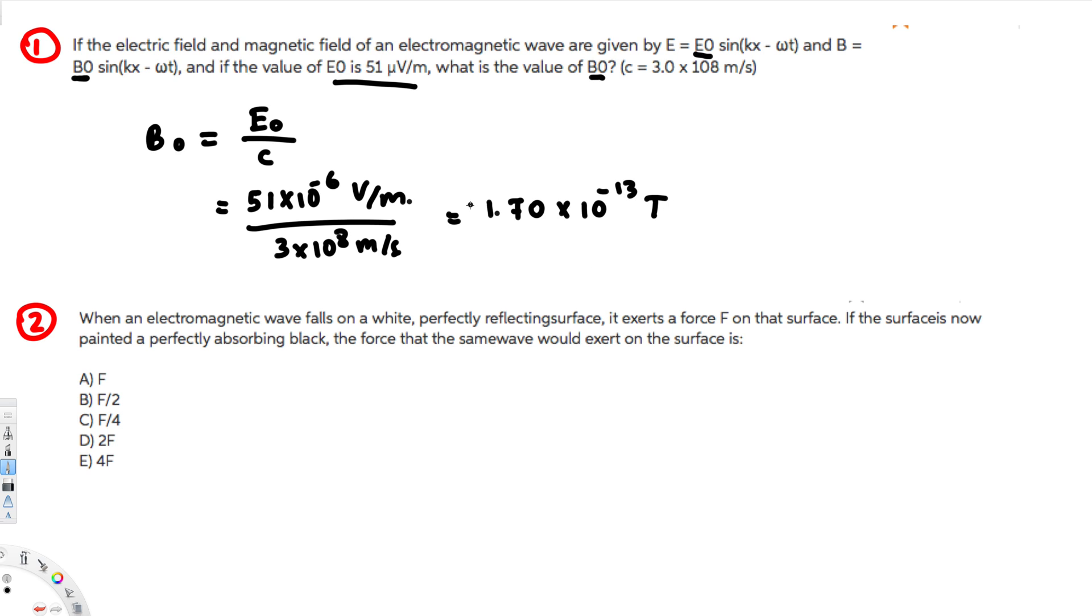Now let's look at the second question. This question is asking when an electromagnetic wave falls on a white perfectly reflecting surface, it exerts a force F on that surface. If the surface is now painted perfectly absorbing black, the force that the same wave would exert on the surface is what?